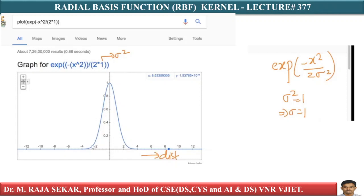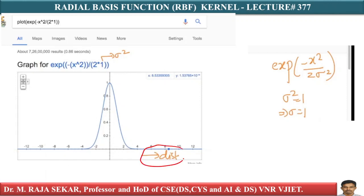On the x-axis, I am taking distance. The plot is of the function exp(−x² / 2σ²), plotted in Google. Here I am assuming sigma equal to 1, so the denominator is 2 times 1 squared, which is 2 times 1. This is the plot for sigma equal to 1.